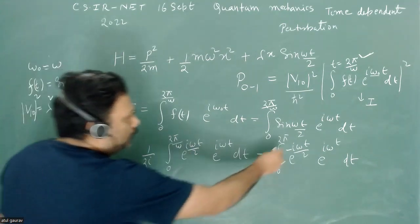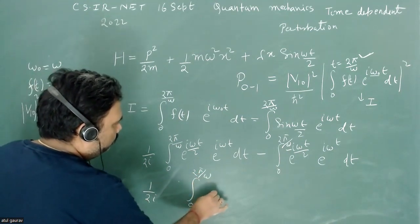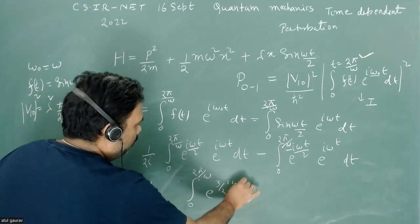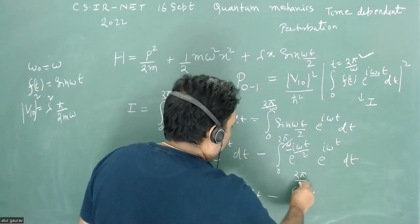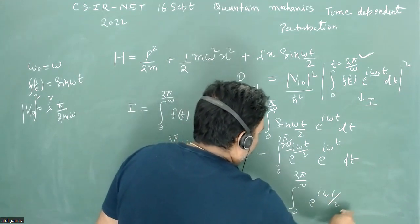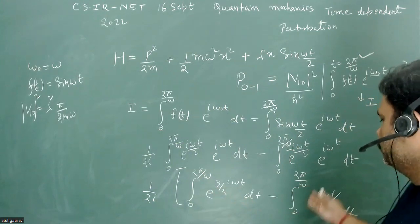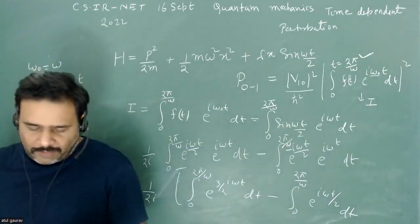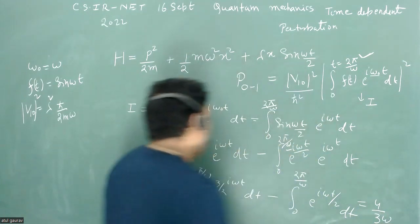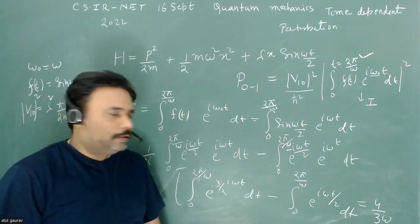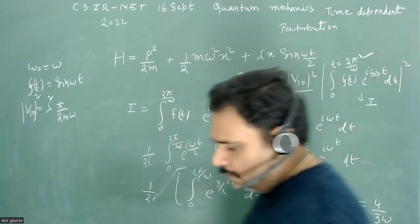We now have the first integral ∫₀^(2π/ω) e^(3iωt/2) dt and the second ∫₀^(2π/ω) e^(iωt/2) dt. After applying the limits 2π/ω and performing the evaluation, the final result of this integration I is equal to 4/(3ω).